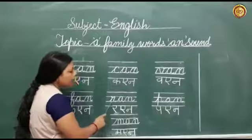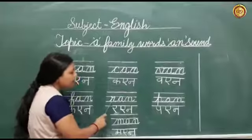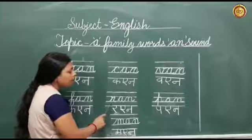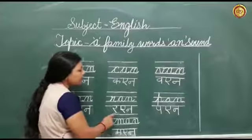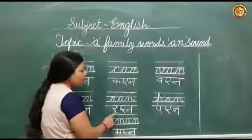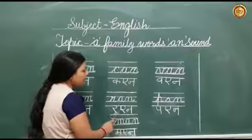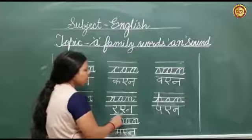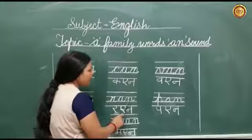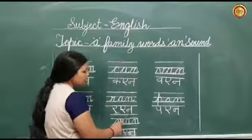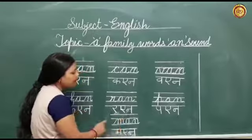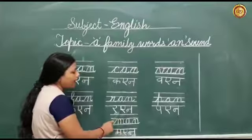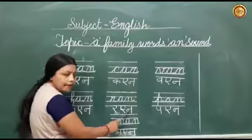This is letter R. The sound of R is 'R'. This is letter A. The sound of A is 'A'. This is letter N. The sound of N is 'N'. So we can read it like this: R, A, N — RAN.